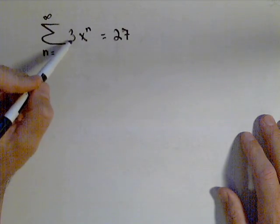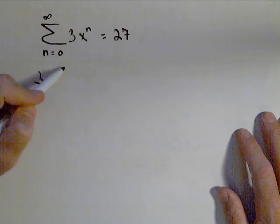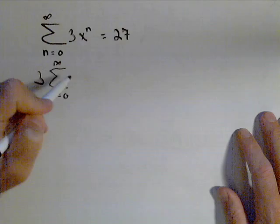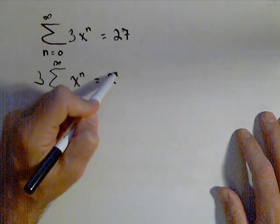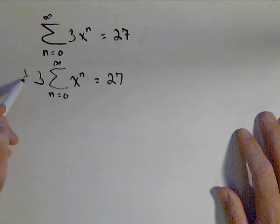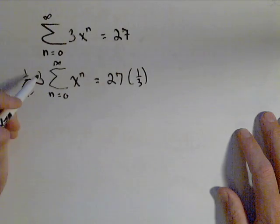So what we can do, well first off, by properties of summations, I can pull that 3 out front, and I have the summation of n equals zero to infinity of just x^n equals 27. Now, the advantage to doing that is I can now divide both sides by 3, or multiply them by one-third, which might look a little nicer with the way we have this written.